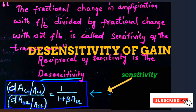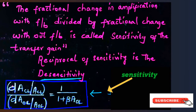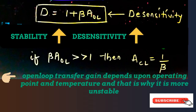The transfer gain AOL of the basic amplifier is not constant, as it depends upon parameters like operating point and temperature. This lack of stability of the basic amplifier can be reduced with negative feedback. By applying negative feedback, we can increase the stability of the basic amplifier as its sensitivity towards fractional changes in amplification is reduced. Sensitivity is the reciprocal of desensitivity — it is the ratio of fractional change in amplification with feedback to fractional change in amplification without feedback. By looking at the equation of desensitivity, the change in gain with feedback is less than the change in gain without feedback by factor (1 + AOL·β).